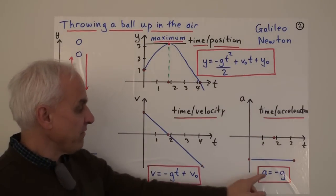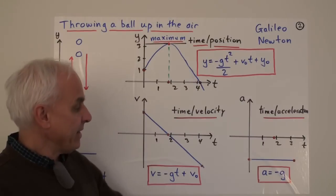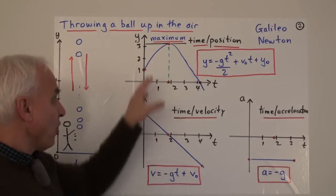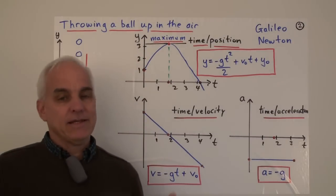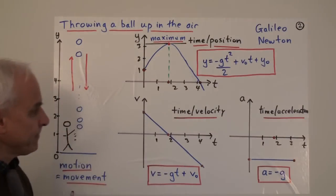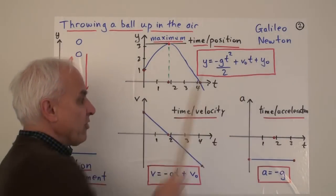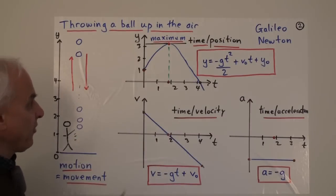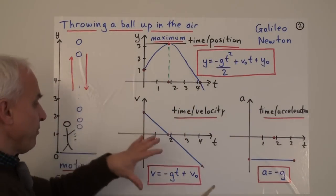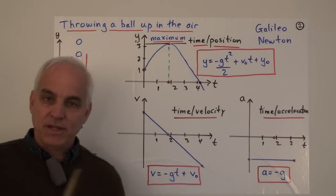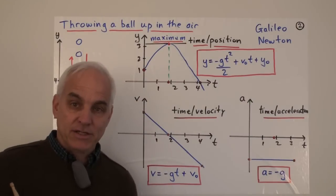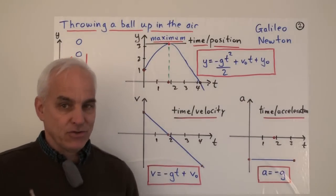Newton's key understanding was that the acceleration is constant, which is responsible for the velocity having a linear form, and the velocity having that form is responsible for the position being a parabola. Newton framed his laws in terms of acceleration. The problem of how to go from knowing the acceleration to knowing the position is a key motivating problem for calculus. Galileo also contributed here. The three diagrams — time and position, time and velocity, time and acceleration — and the relationships between them are at the heart of both the differential calculus and the integral calculus.